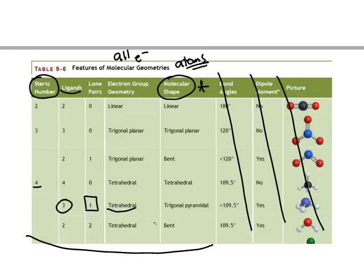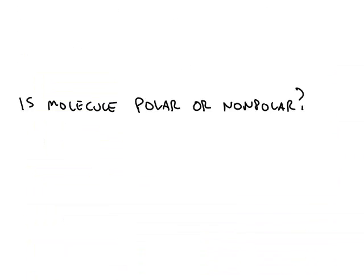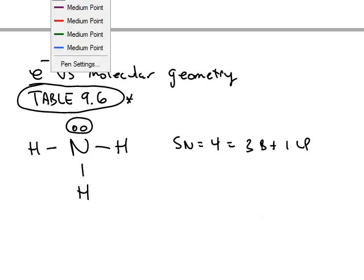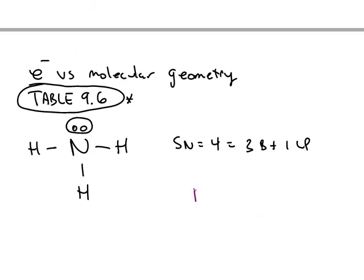So the nitrogen is above the plane where the three hydrogens are, and then we have a lone pair of electrons at the top that gives us this trigonal pyramidal shape.